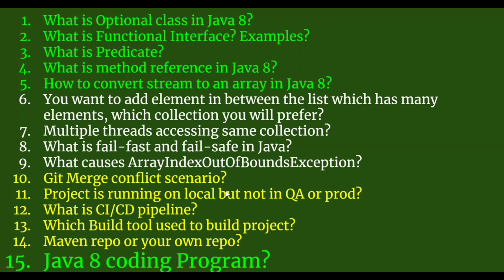Do you know method reference in Java? Generally, to call a method you have to create an instance of the class just for calling the method. Java has provided a convenience syntax where to call a method from a class you can use method reference. For example, to call the println method from System.out, you write System.out, then the method reference operator (::), then the method name println. You can use method reference to call either static methods or instance methods.